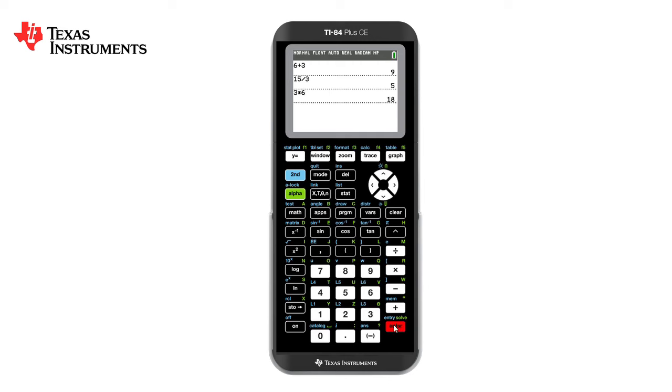If we would like to scroll up and use any of those calculations again we can just simply arrow up using the white arrow, press enter to copy, scroll back into the question and change the numbers. Equally we can scroll up, press enter again and add to that calculation.